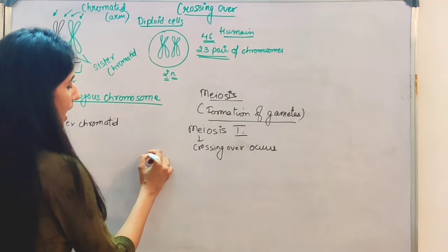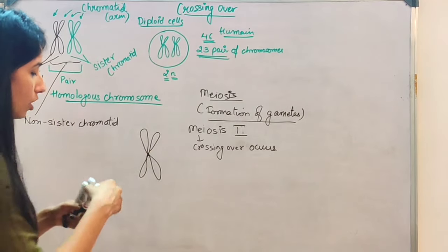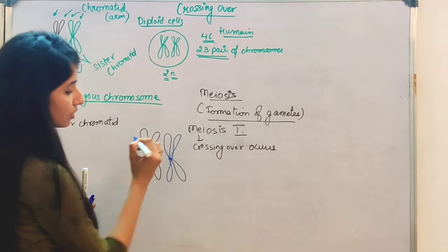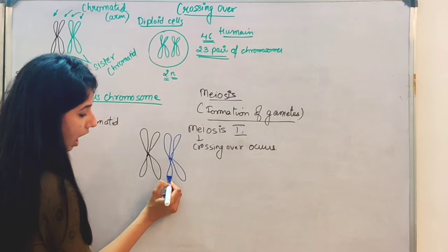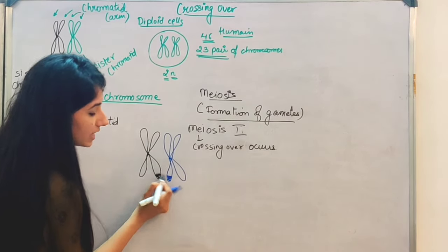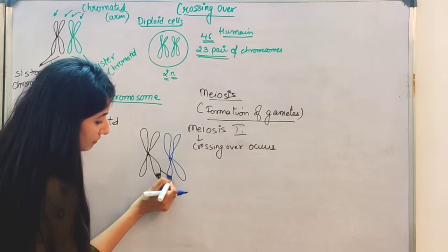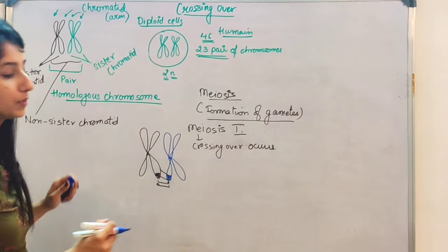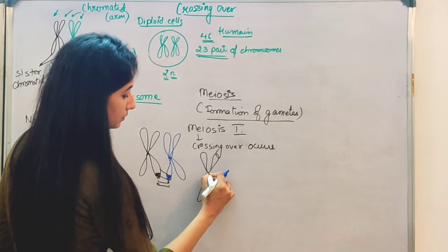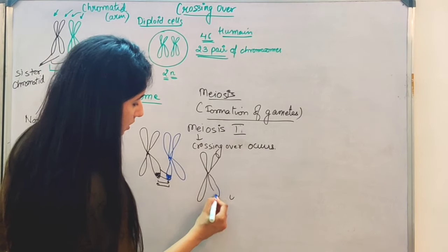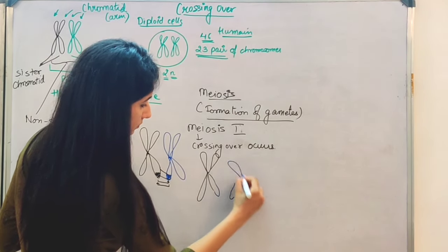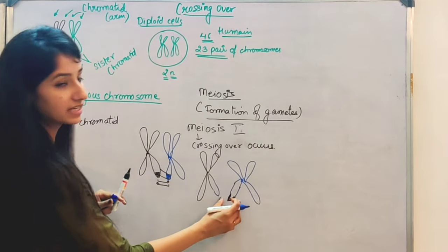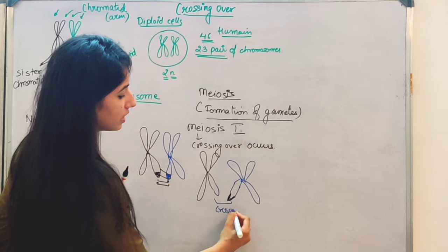What happens during this? One pair of homologous chromosomes is present. This arm and this arm — they both will be exchanged. This arm will exchange its material with this arm. Its part has gone there and its part has come here. The result will be like this — this much part has been exchanged between the two chromosomes. This part is exchanged between the two chromosomes, and this is known as crossing over.